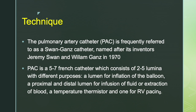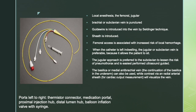The technique is mostly like central line placement. A pulmonary artery catheter called the Swan-Ganz catheter is introduced — it is a 5 to 7 French catheter. Unlike a central line, it contains 2 to 5 lumens, each with a different purpose: one for balloon inflation, one for instilling fluids, extracting blood, and pacing. Local anesthetic is given. The jugular or subclavian site is preferred over the femoral site. The guide wire is introduced via Seldinger technique, the sheath is introduced, and once access is obtained, the catheter is left indwelling.